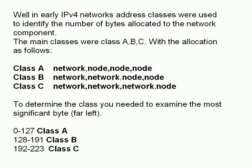In early IPv4 networks, address classes were used to identify the number of bytes allocated to the network component and the number of bytes allocated to the node component. We had three address classes: class A, class B, and class C. Class A used one byte for the network and three bytes for the node, class B used two bytes for the network and two bytes for the node, and class C used three bytes for the network and one byte for the node.